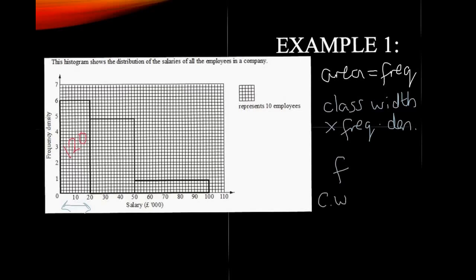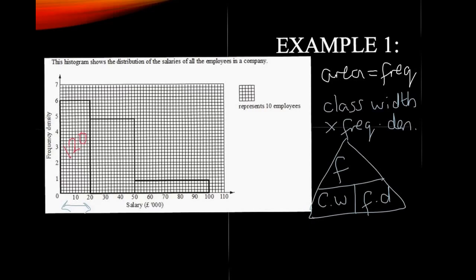I often use a small triangle — very much like a speed, distance, time triangle — to calculate information on histograms. As long as I remember that the area represents the frequency, and that means class width multiplied by frequency density gives me my frequency, I can use the triangle. It might be that we have to calculate class width, or frequency density — it could be any number of things. So this triangle is going to be really, really important.